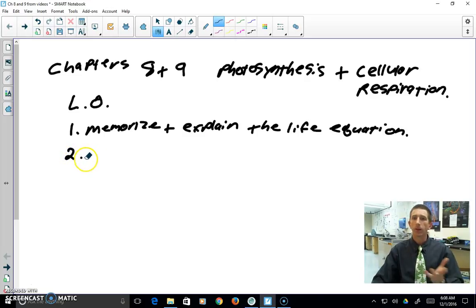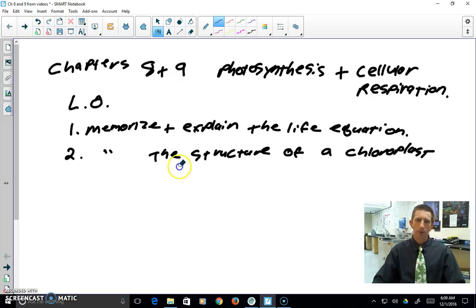Alright. So then learning objective number two, both photosynthesis and cellular respiration happen in specific organelles. Hopefully you remember those from chapter seven. So we're going to look at the structure. We're going to look in depth. We're going to zoom in even more into the cell. We're going to look at and memorize the structure of a chloroplast, which is where photosynthesis happens, and of course, mitochondria, which is where cellular respiration happens. So we are going to memorize the structure of a chloroplast and a mitochondria.